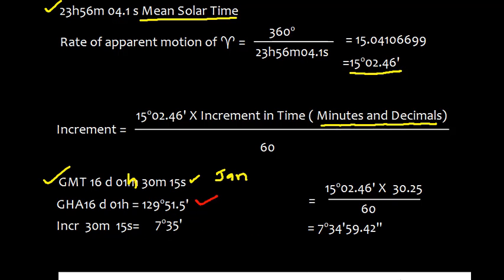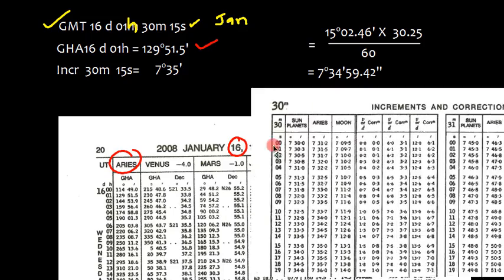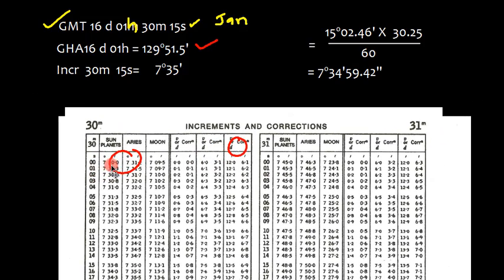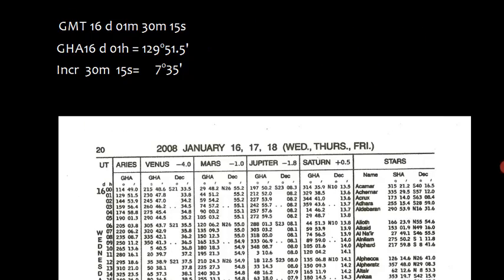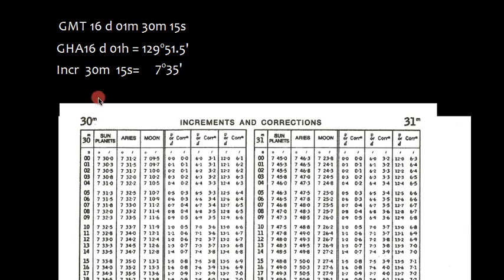The second solution is I can have a look here in the increment table. If we come to the increment table, go to the 30 minute page and 15 seconds and there are three tables. One is sun and planet, another one is Aries and third one is moon. So I look for the Aries and I find 7 degrees 35 minutes. That is what exactly we calculated.